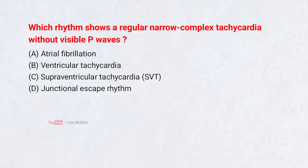Which rhythm shows a regular narrow complex tachycardia without visible P-waves? A. Atrial fibrillation, B. Ventricular tachycardia, C. Supraventricular tachycardia (SVT), D. Junctional escape rhythm. Correct answer: C. Supraventricular tachycardia (SVT).